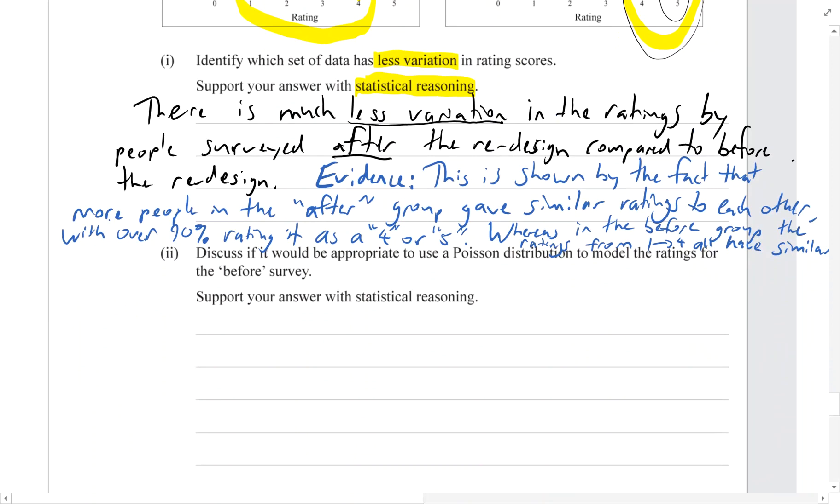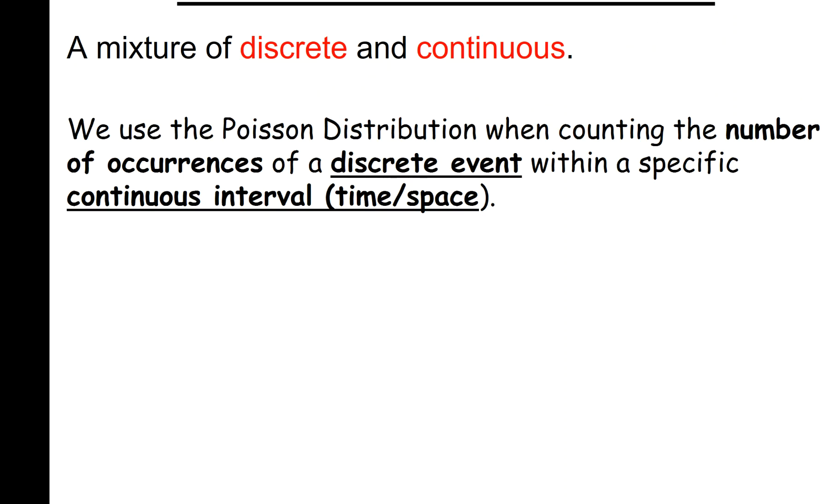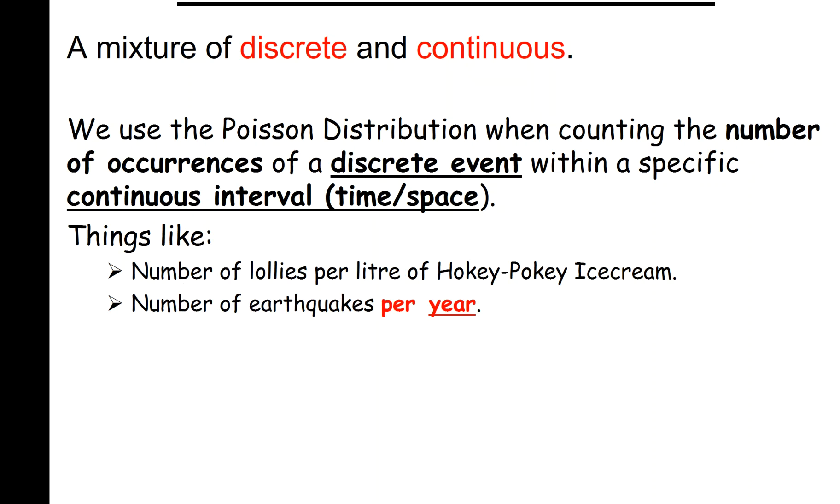Now part two: discuss if it would be appropriate to use a Poisson distribution to model the ratings for the before survey. Support your answer with statistical reasoning. So let's actually go through the requirements for using a Poisson distribution. We use the Poisson distribution when counting the number of occurrences of a discrete event within a specific continuous interval of time or space - things like number of lollies per liter of hokey pokey ice cream, number of earthquakes per year excluding aftershock sequences.